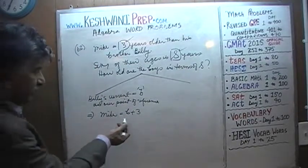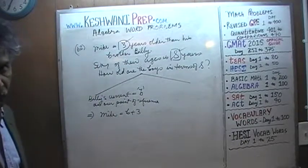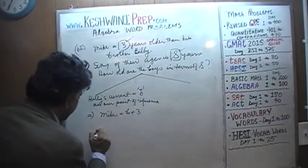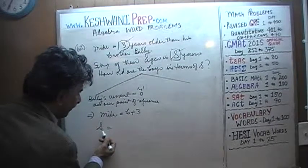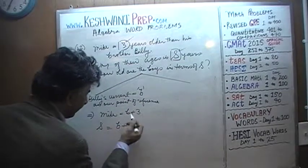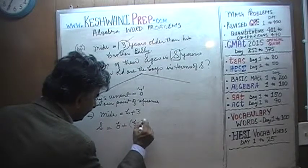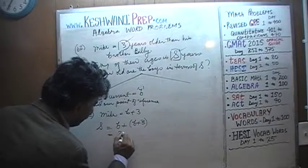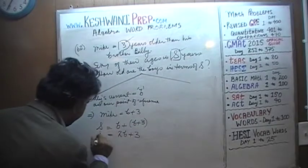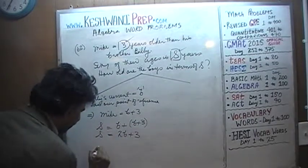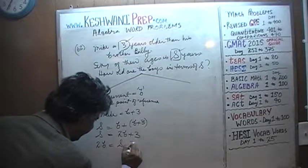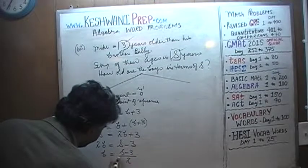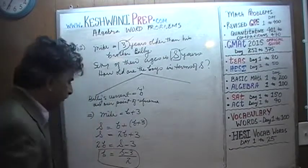If Billy's current age is b — we just made up this variable, it's not in the problem — then we are told that Michael is three years older than Billy, which implies Michael's current age must be b plus three. Their sum we are told is s, so s equals b plus (b plus three).